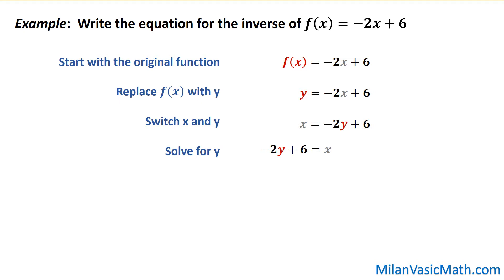So to get y by itself, we subtract 6 from each side. You get negative 2y equals x minus 6. You divide everything by negative 2. And we get y equals negative 1 half x plus 3. And that will be the inverse function.